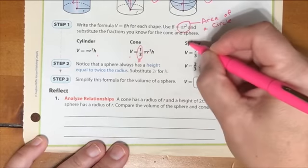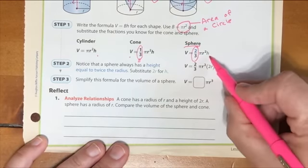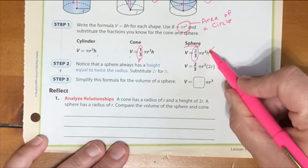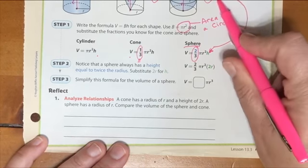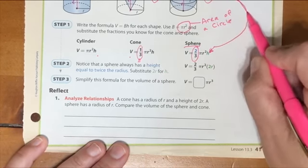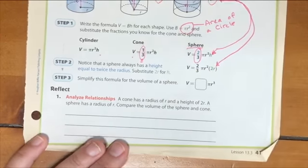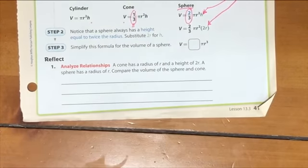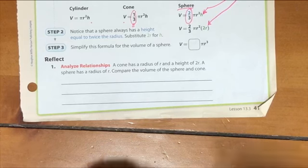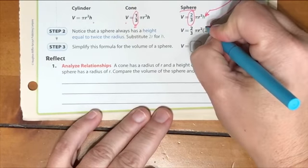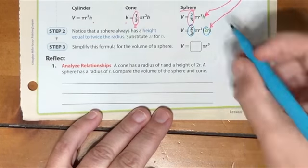A cone, we found out, was one-third of that volume. Well, a sphere turns out to be two-thirds of that volume. Except in a sphere, the height is not necessarily h. We know that the height is two radiuses always, so it's as tall as two radiuses, and we can put that in place of h.